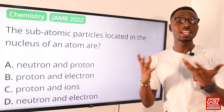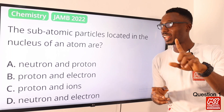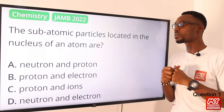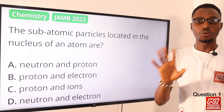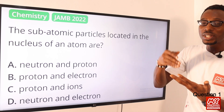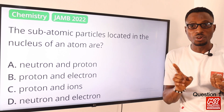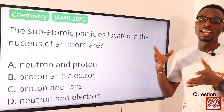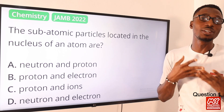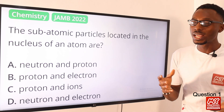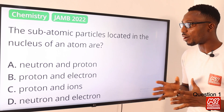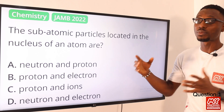We are going to solve questions 1 to 20. Question number one: the subatomic particles located in the nucleus of an atom are what? We are talking about an atom — we have the nucleus where we have the proton and the neutron, then around the nucleus we have the orbit where there are electrons. The contents found in the nucleus include the neutron and the proton. Option A is the right option.